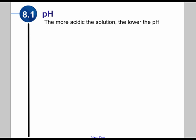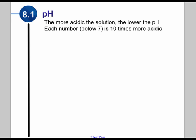What this tells us is that each number below 7 is actually 10 times more acidic than the previous number. We're going to look at that in a second here.